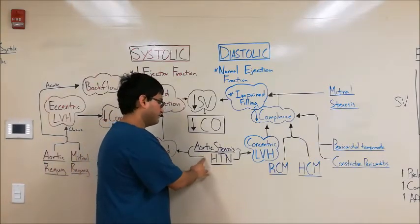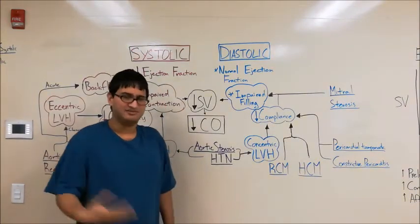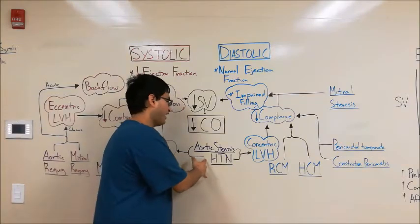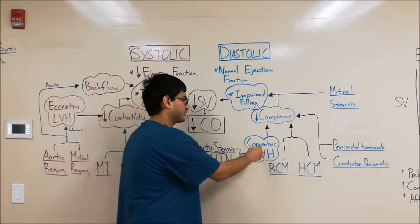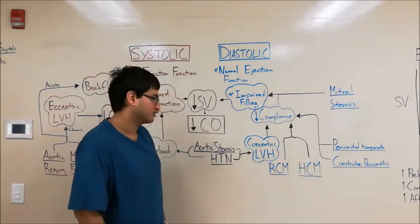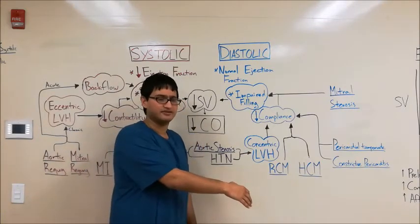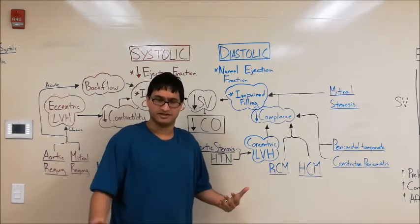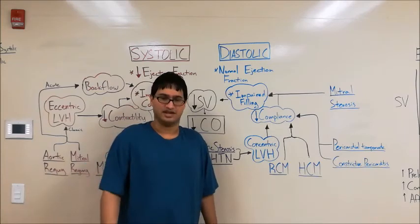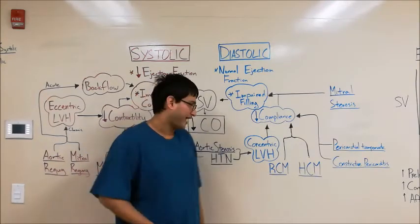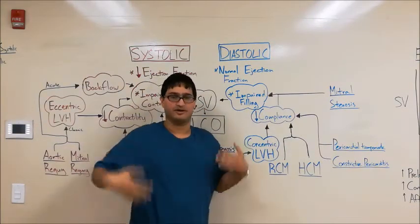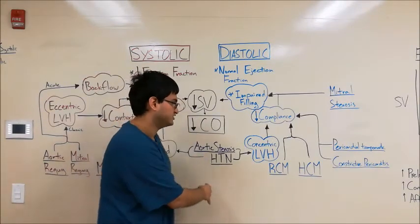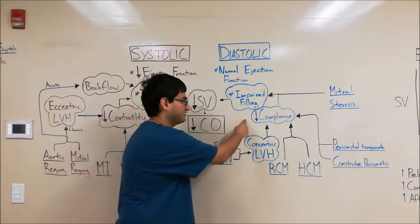Aortic stenosis and hypertension cause increased afterload, making it harder for the heart to pump out blood. The heart adapts by undergoing concentric left ventricular hypertrophy, which increases contractility. However, while this makes the heart stronger, it sacrifices compliance — the ventricle becomes stiffer. So even though pumping ability is enhanced, the ventricle fills with less blood to begin with, leading to impaired filling and decreased cardiac output. To reiterate: aortic stenosis and hypertension, when untreated, lead to concentric hypertrophy, which causes decreased compliance, impaired filling, and heart failure.